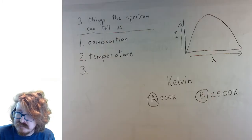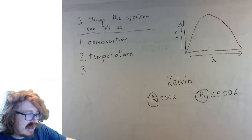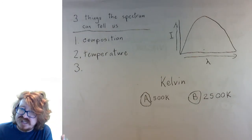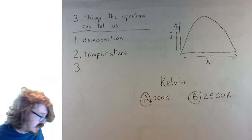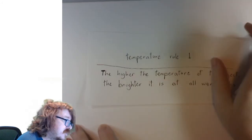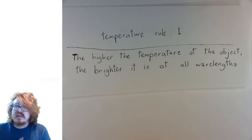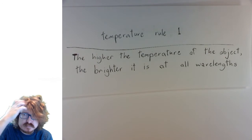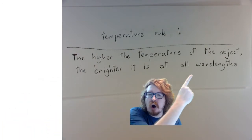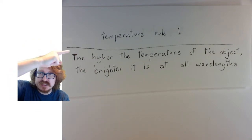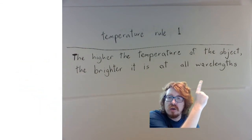Let me put it into slightly more technical terms. I actually wrote this out ahead of time because I'm a slow writer. Here we go. The first temperature rule is basically just saying that hot things are brighter, but I'm going to be a little bit more technical here. So, the higher the temperature of the object, the brighter it is at all wavelengths. The higher the temperature of the object, the brighter it is at all wavelengths.